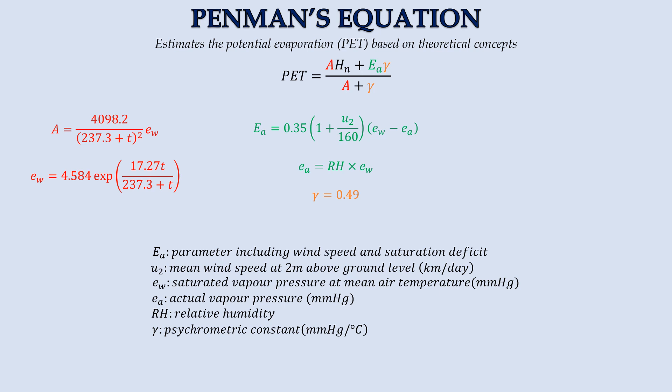Ea is dependent on the wind speed at 2m above ground level, saturated vapor pressure at mean air temperature, and actual vapor pressure. You may refer to our video titled Estimating Evaporation for the methods to calculate these parameters. Note that the unit of wind speed here is now km per day instead of km per hour.